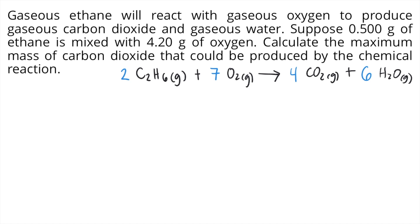Now that we have our balanced chemical equation, we can proceed to the calculation. In the problem, we are given two reactants with different amounts: 0.500 grams of ethane and 4.20 grams of oxygen.